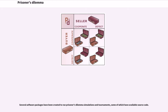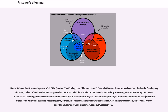Several software packages have been created to run Prisoner's Dilemma simulations and tournaments, some of which have available source code. Hannu Rajaniemi set the opening scene of his The Quantum Thief trilogy in a Dilemma prison. The main theme of the series has been described as the inadequacy of a binary universe and the ultimate antagonist is a character called the All Defector. Rajaniemi is particularly interesting as an artist treating the subject in that he is a Cambridge-trained mathematician and holds a PhD in mathematical physics. The interchangeability of matter and information is a major feature of the books, which take place in a post-singularity future. The first book in the series was published in 2010, with the two sequels, The Fractal Prince and The Causal Angel, published in 2012 and 2014 respectively.